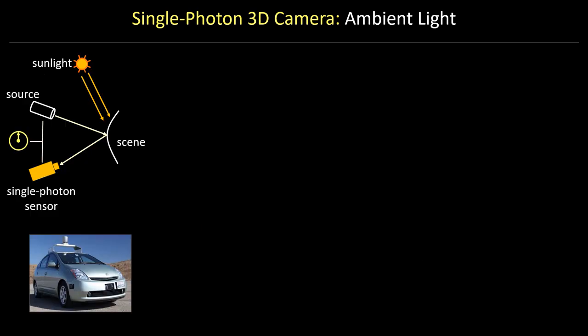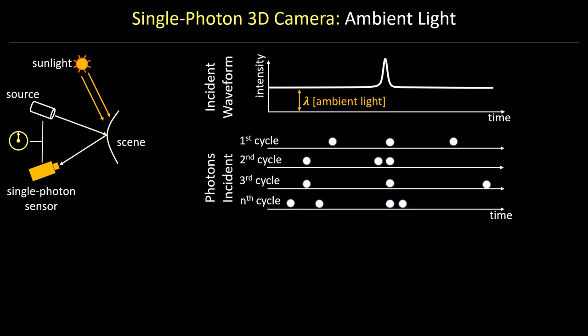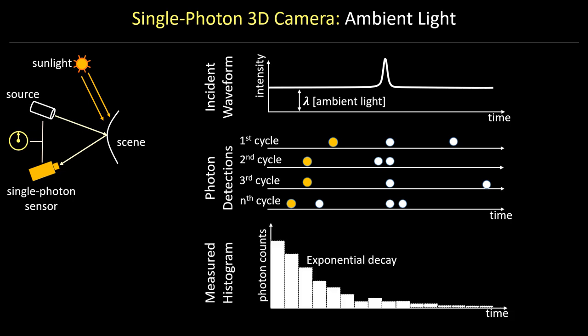So, let's look at the case where there is ambient light, for example sunlight, in the scene. The incident waveform now has a vertical shift due to sunlight and many ambient photons appear in each cycle. But this causes a problem. The first photon in every cycle is likely going to be an ambient light photon. This distorts the captured histogram and the true peak gets buried under the ambient photons, making the peak hard to locate.